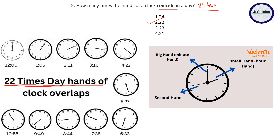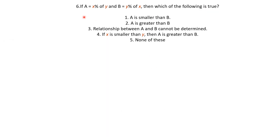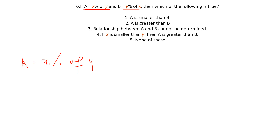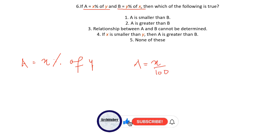Next question: if A equals X percent of Y, and B equals Y percent of X, which of the following is true? The options are: A < B, A > B, relationship cannot be determined, X < Y and A > B, or none of the above. Writing out the equations: A = (X/100) × Y, and B = (Y/100) × X.